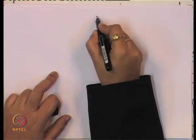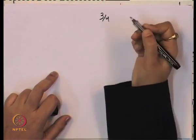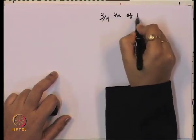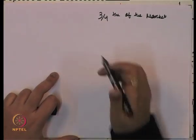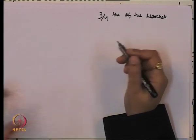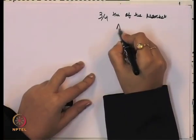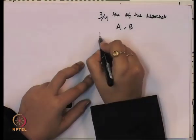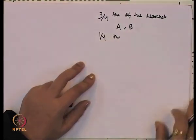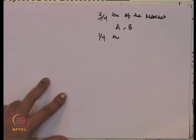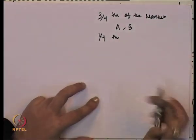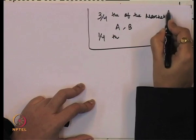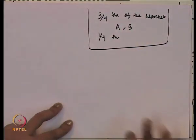In the last class, we talked about a situation where A and B together were producing three fourths of the market and one fourth was not produced either by firm A or firm B in the first period. Now, what will happen in period two? In the first period, three fourths was produced together by A and B and one fourth was not.